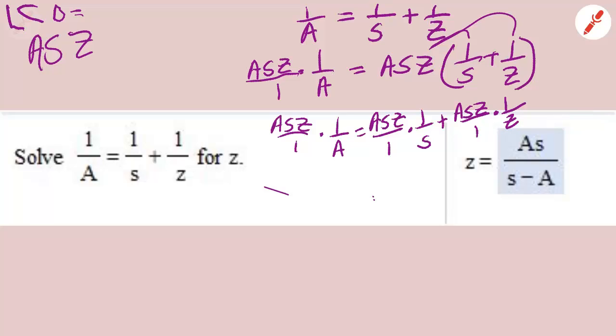Now, why did I do this? I'll show you. A here is going to cancel A here. S here is going to cancel S here. And Z here is going to cancel Z here. So what are we going to have so far? We're going to have SZ equals AZ plus AS.